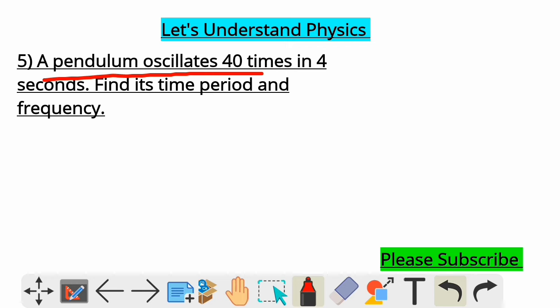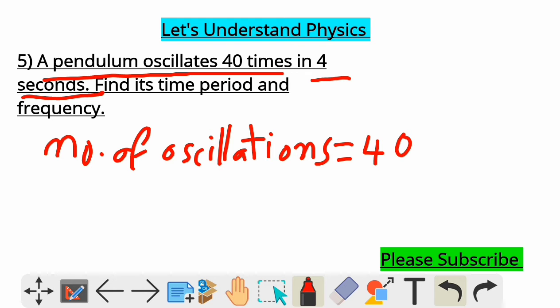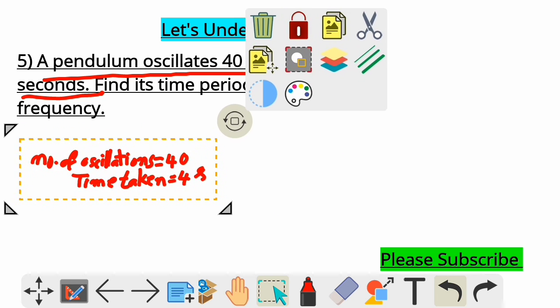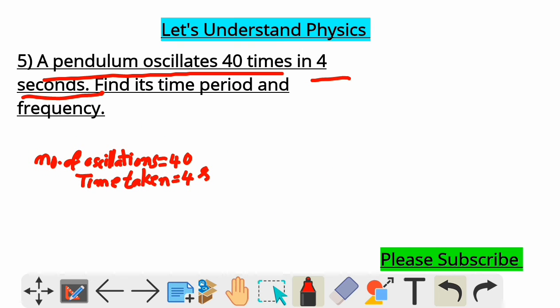A pendulum oscillates 40 times in 4 seconds. So, only this is the data given for you. What is given? Number of oscillations 40 and time taken equal to 4 seconds. So, this is the given data. And what are they asking you to find? They are asking you to find time period and frequency.